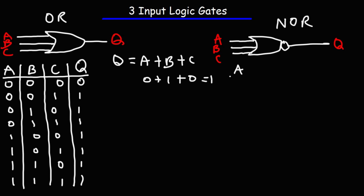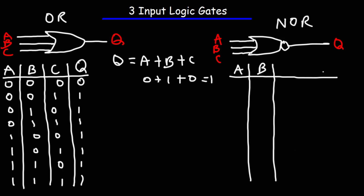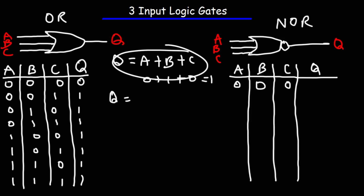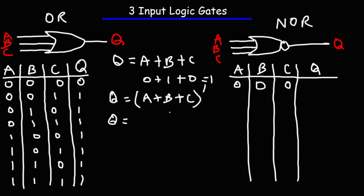Now let's finish up the truth table for the NOR gate. The output is simply the complement of the three input OR gate. The formula is the complement of the sum of A, B, and C. So when all inputs are zero, 0 plus 0 plus 0 is 0, and the complement of 0 is 1, so we get a 1 at the output.